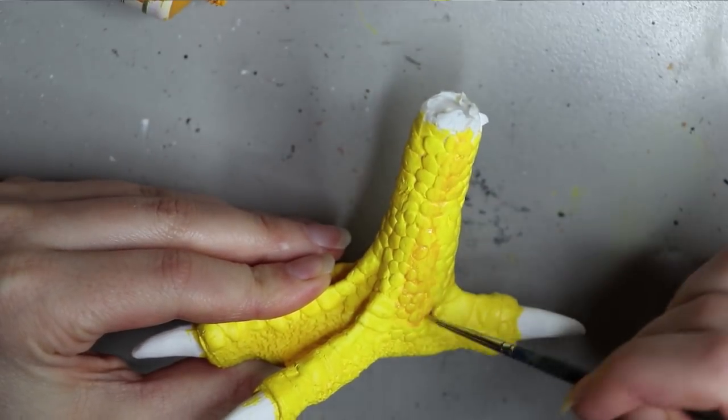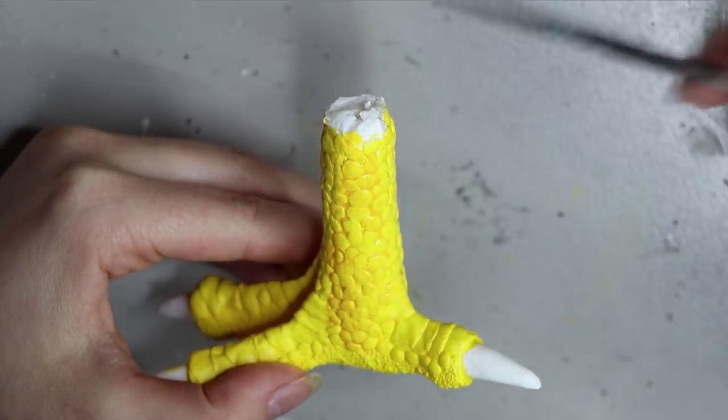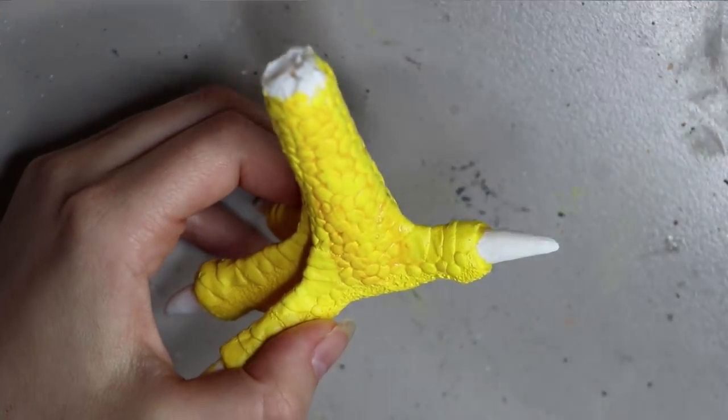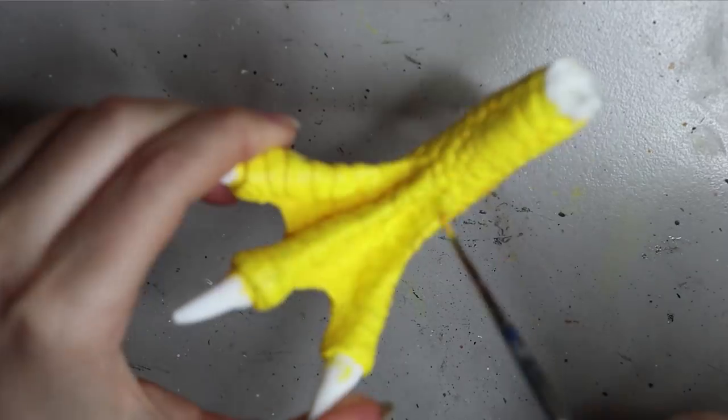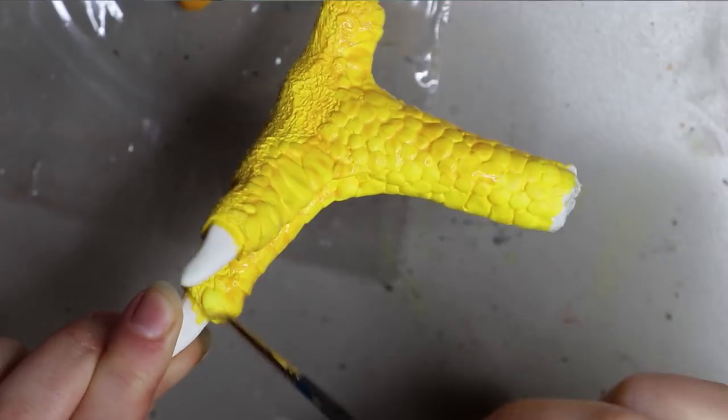I'm using that warm yellow for a wash over that cool yellow. I wanted it to go into all of the little crevices of the scales and stuff. I'm loading it up - I ended up not using so much water just because I wanted it a bit more vibrant.